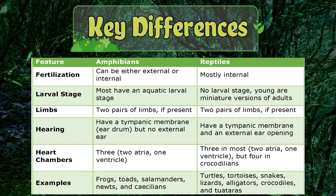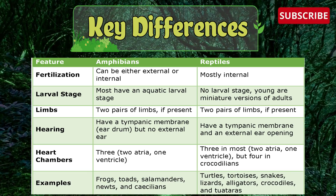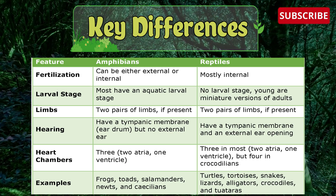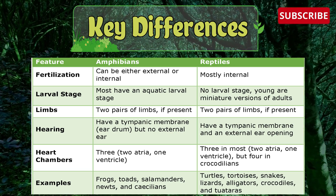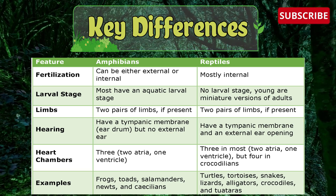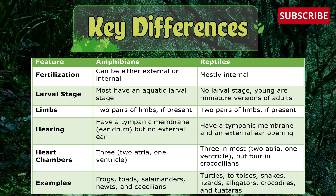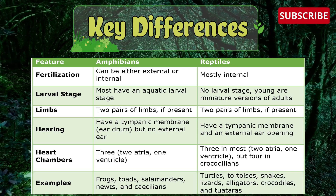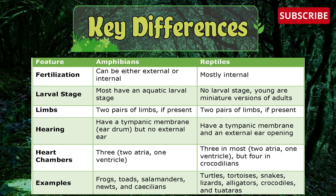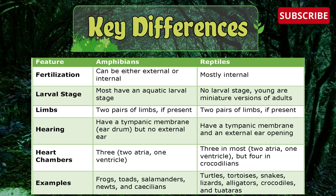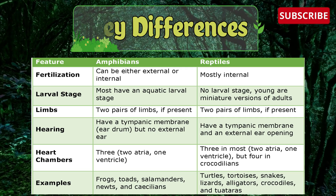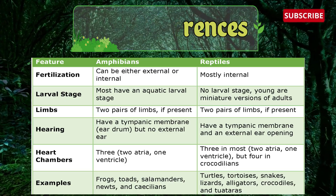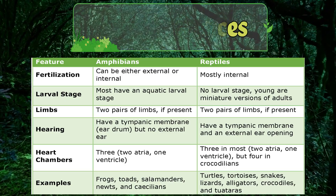Examples of amphibians include frogs, toads, salamanders, newts, and caecilians. Examples of reptiles include turtles, tortoises, snakes, lizards, alligators, and crocodiles.